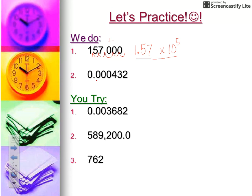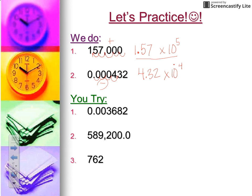Number two is a very tiny number, so it's less than one. That means my exponent is going to be negative. Let's move our decimal one, two, three, four — stopping there gives us a coefficient of 4.32, which is greater than one but less than 10. We write times 10, we moved the decimal four places, and since this was a small number representing a tiny quantity, it's going to have a negative exponent: 4.32 × 10⁻⁴.